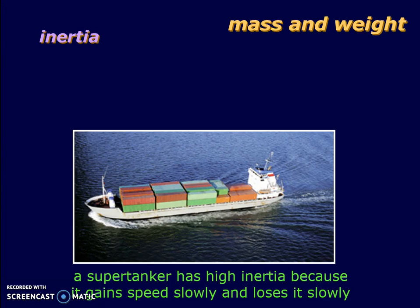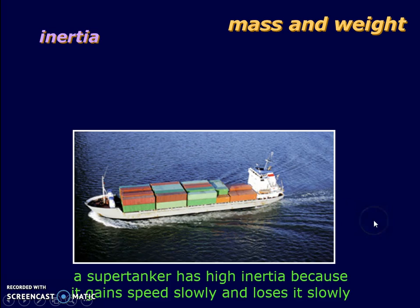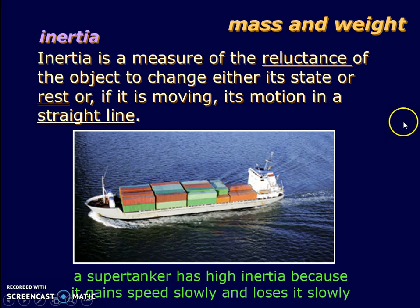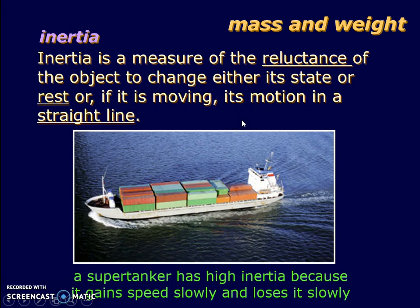There is one more term to learn: inertia. In layman terms, this is like your inertia to do your homework — your unwillingness to do it. So when we say an object has inertia, we are talking about its unwillingness to change its state. A supertanker, for example, has high inertia — it gains or loses speed very slowly because of its large mass. Inertia is the reluctance of an object to change either its original state of rest or its state of motion in a straight line.